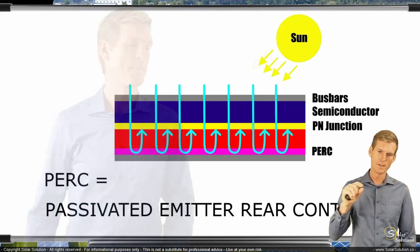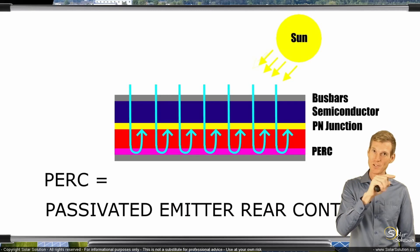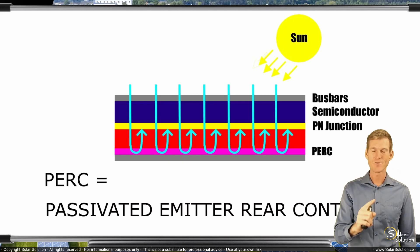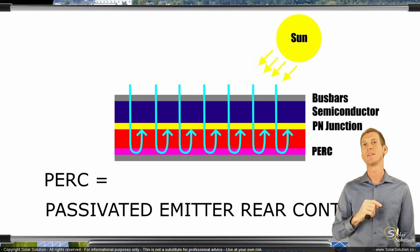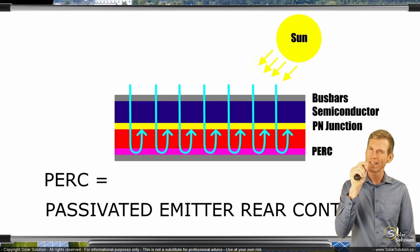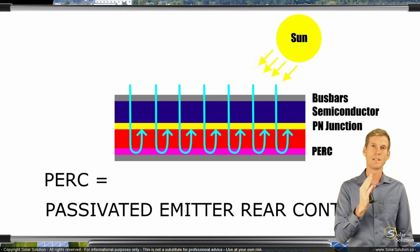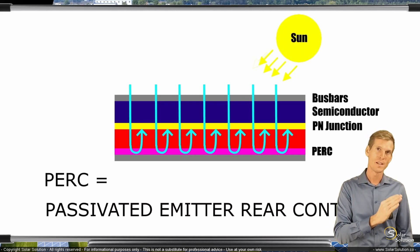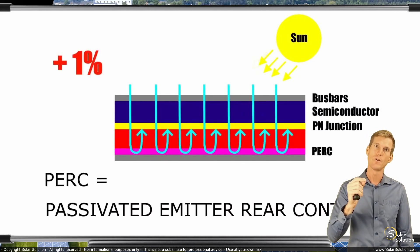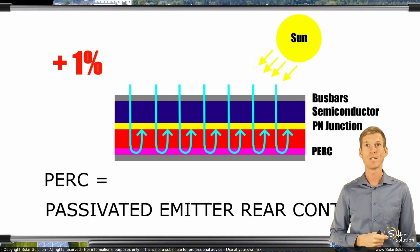By placing the PERC layer there, you're turning the solar leakage that's going through the PN junction and not doing anything — you're turning it around, sending it back towards the PN junction so that it can still create a little bit more electricity. In general, you can get about 1% more out of a solar cell by applying the PERC layer on the rear side of the photovoltaic cell.